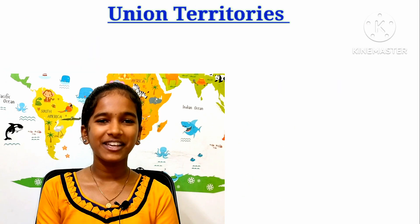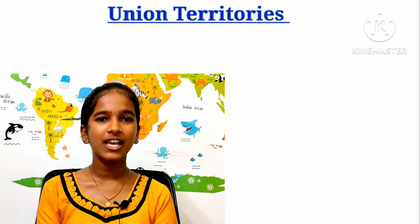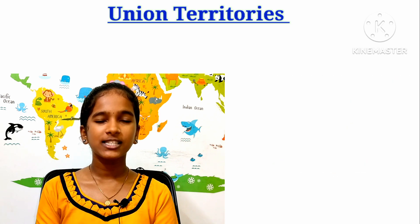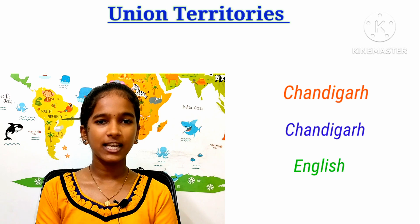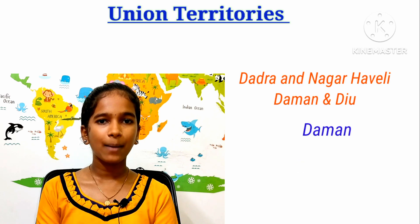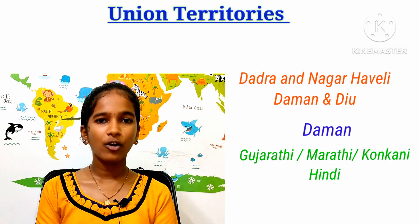Hi, I am Pavani. Now we are going to learn about Union Territory's capital and language. Andaman and Nicobar Islands capital: Port Blair, Language: Hindi and English. Chandigarh capital: Chandigarh, Language: English. Daman and Diu, and Dadra and Nagar Haveli capital: Daman, Language: Marathi, Gujarati, Konkani and Hindi.